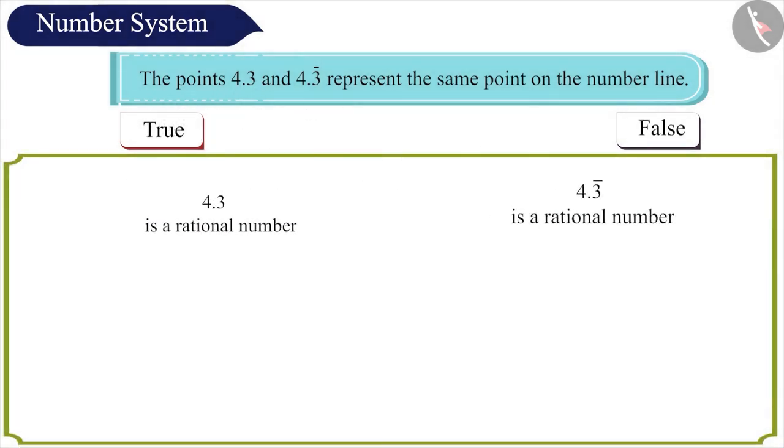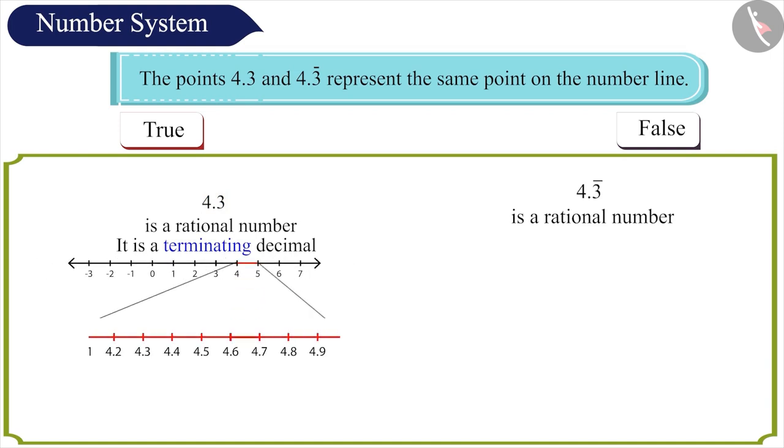Friends, both these numbers are rational numbers. But 4.3 is a terminating decimal. We can accurately represent this number on the number line this way.